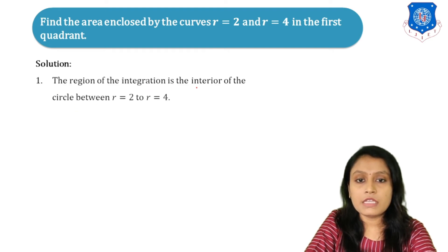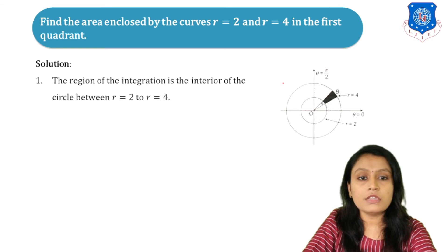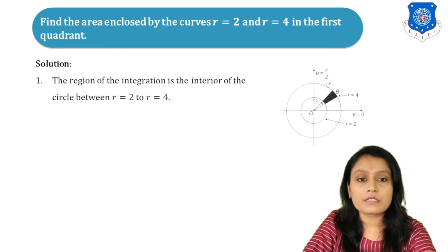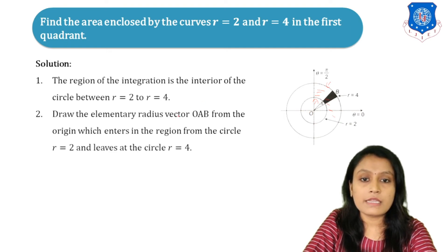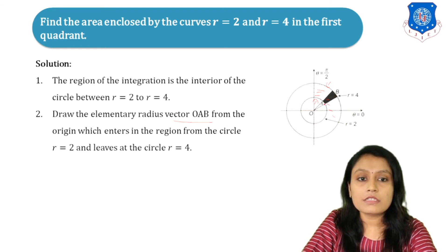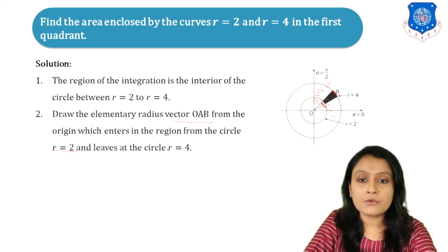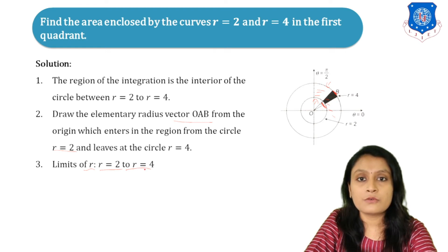The region of integration is the interior between the circles R equals 2 and R equals 4. We draw the circle with radius 2 and the circle with radius 4. The region is bounded between these two circles in the first quadrant. The elementary radius vector enters the region from R equals 2 and leaves at R equals 4, so the limits of R are 2 to 4.